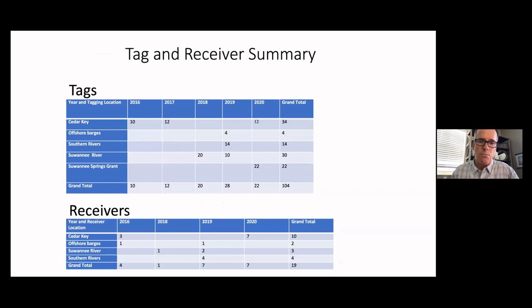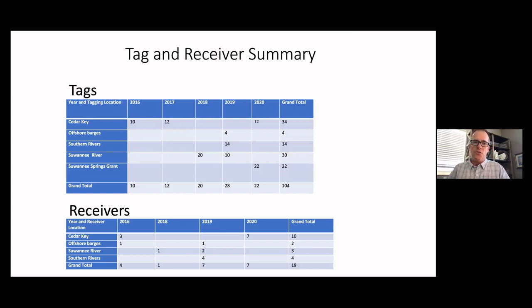We started putting acoustic tags out around Cedar Key and offshore barges in 2016. Right now we've got about 100 fish tagged with acoustic tags — including fish at offshore barges in 20 to 30 feet of water as well as tagged fish in the Suwannee River itself. Each tag is useful because we can follow a fish for up to six years. The tags are about the size of your thumb and surgically implanted into the abdomen. If a fish swims by one of our receivers, we get a recording of where that fish was.